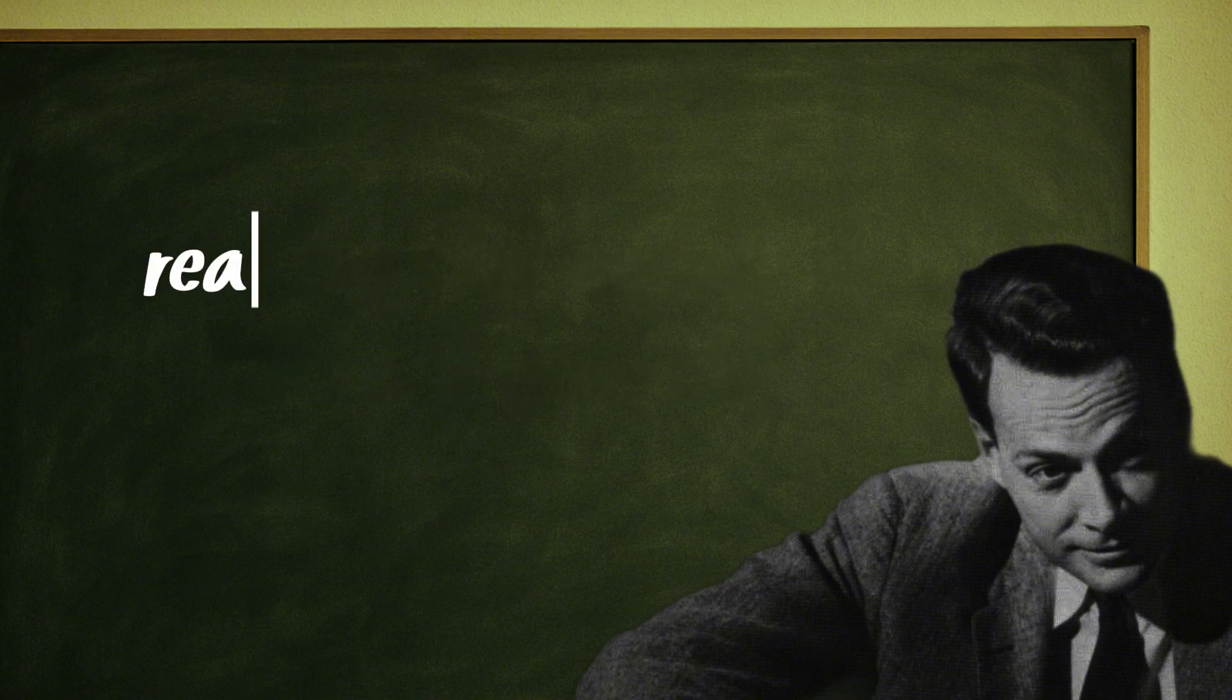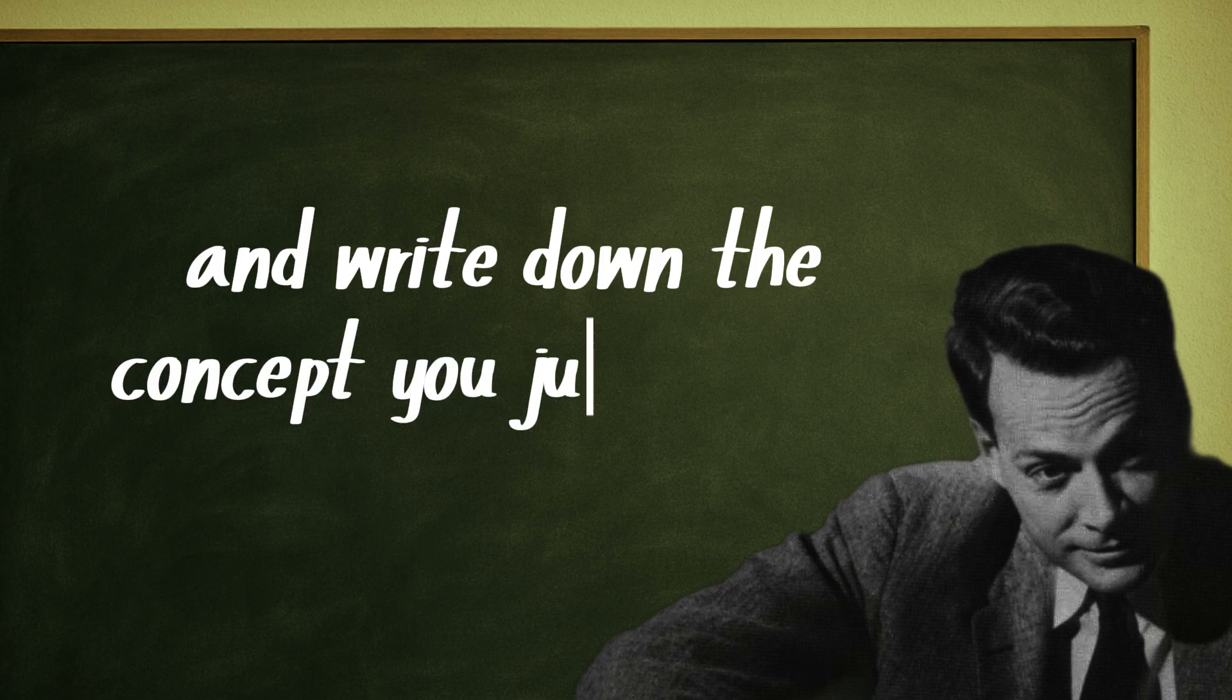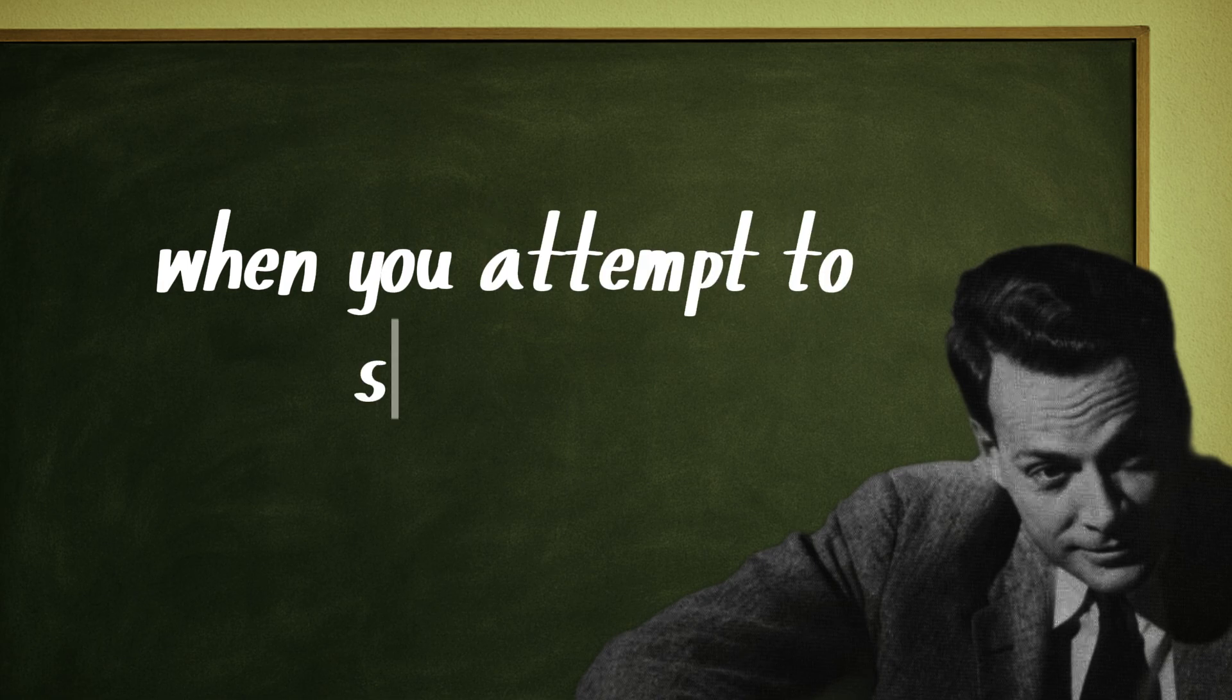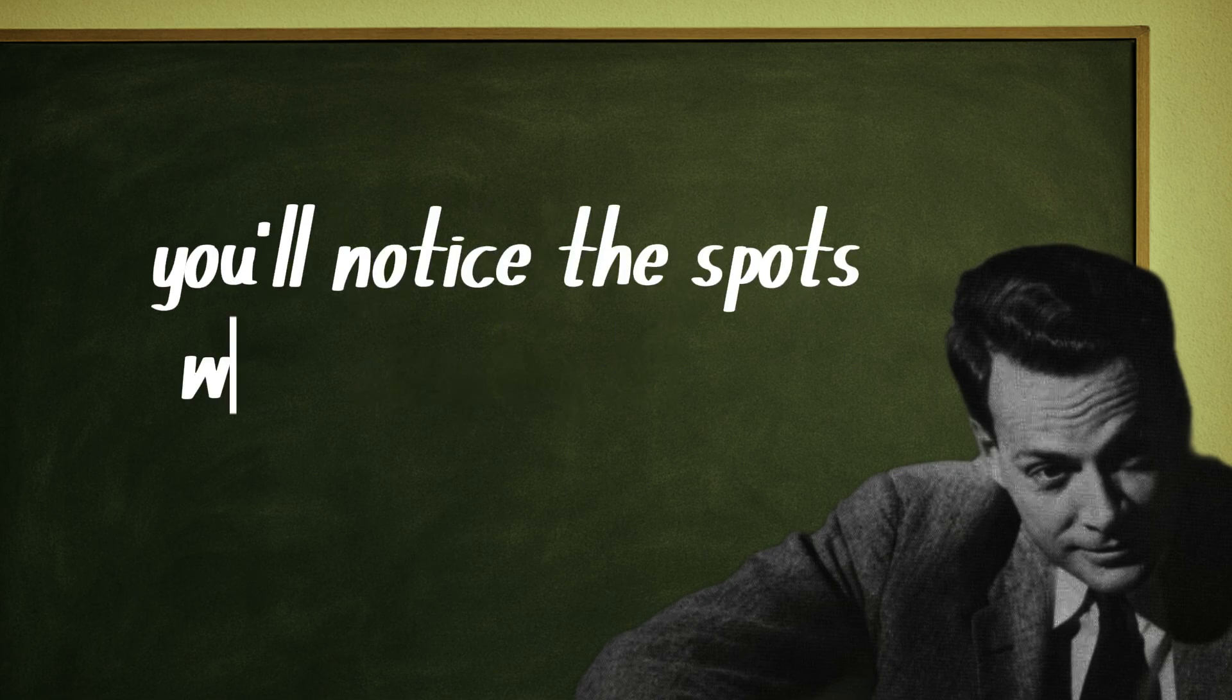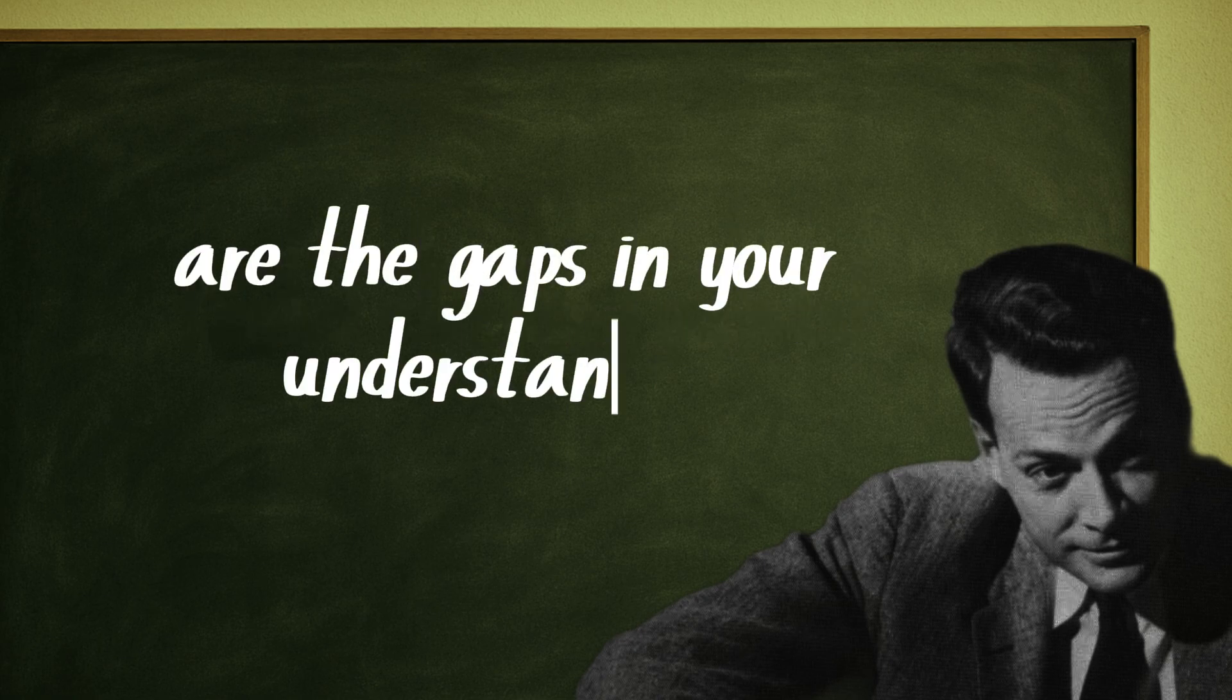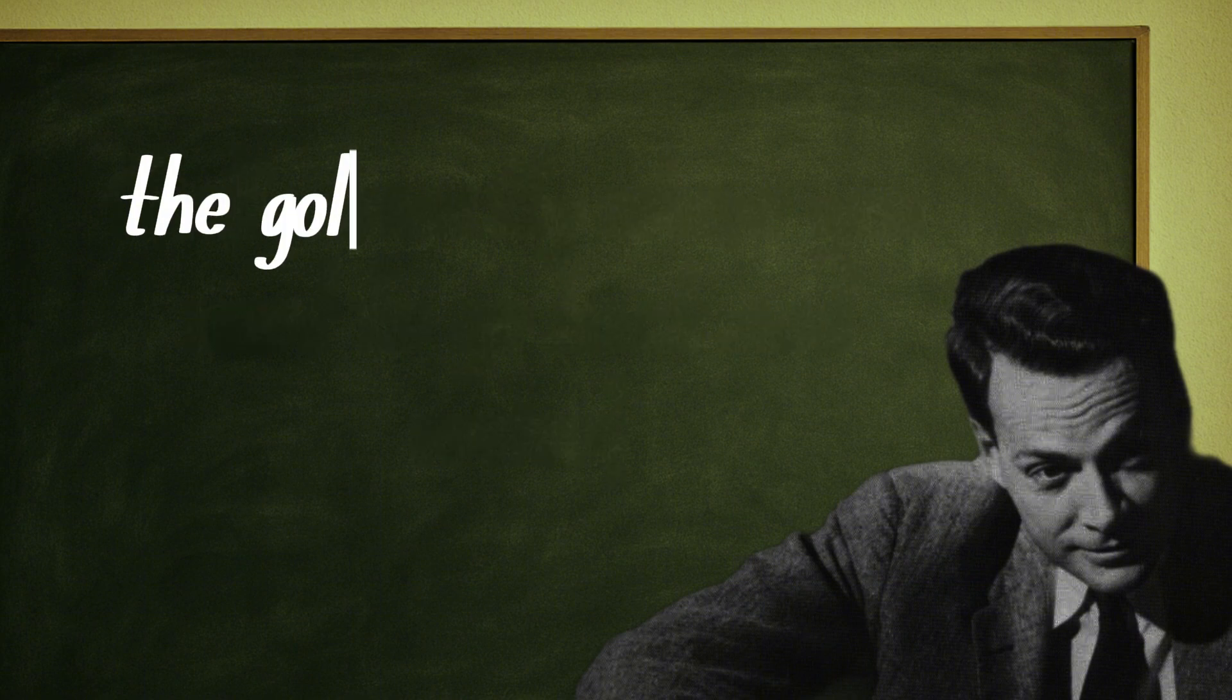Now try this: explain it to a seven-year-old, real or imagined. Take a notebook and write down the concept you just studied, then imagine you're explaining it to a child. When you attempt to simplify it, you'll notice the spots where you get stuck. Those sticking points are the gaps in your understanding. That's exactly where you need to go back and review.